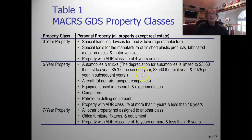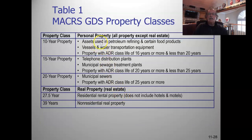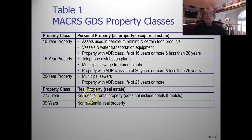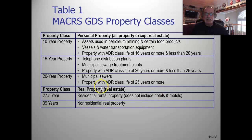The MACRS property classes are: three-year property includes special handling devices for food and beverage and special tools for finished plastic products; five-year property includes automobiles, trucks, aircraft, computers, and petroleum drilling equipment; seven-year property is all other property including office furniture; ten-year property includes petroleum refining assets and vessels; fifteen-year property includes telephone utilities; twenty-year property includes sewers; twenty-seven-and-a-half-year property is residential rental property; and thirty-nine-year property is non-residential real estate such as commercial buildings.